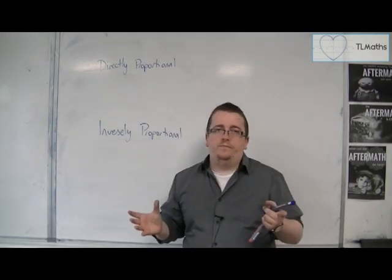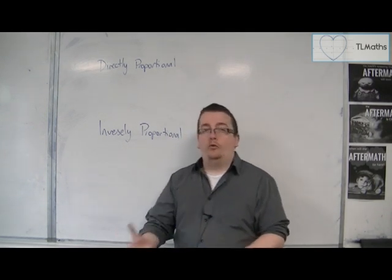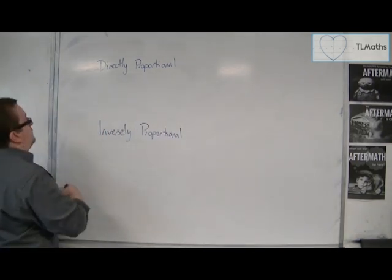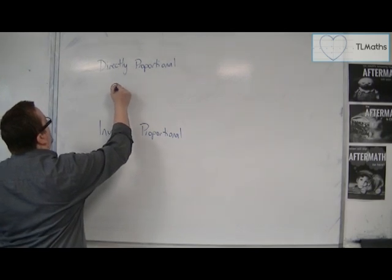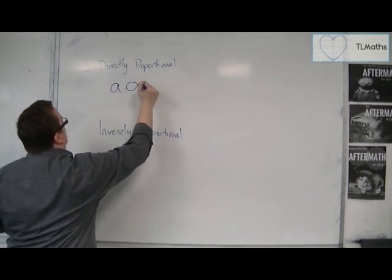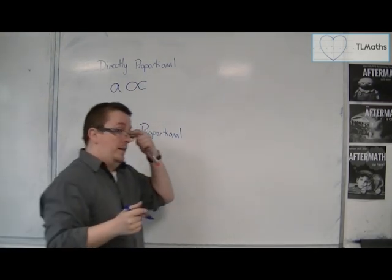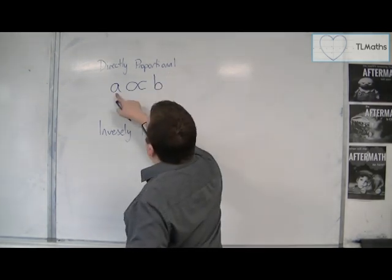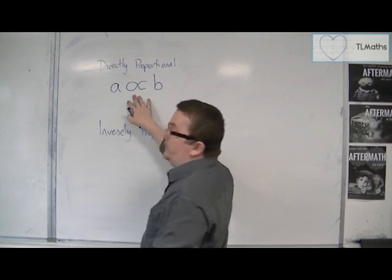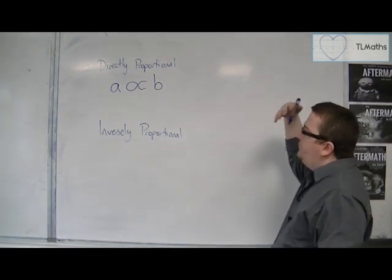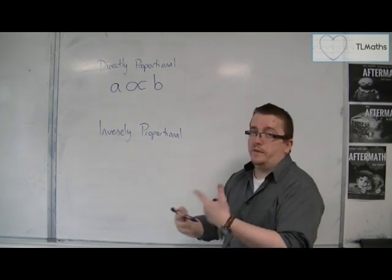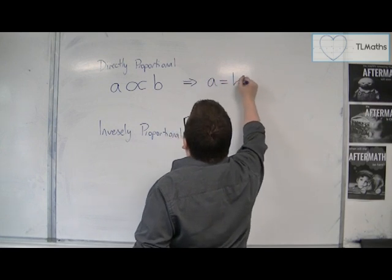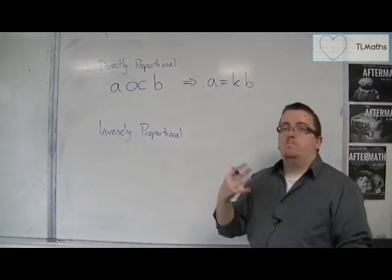Direct proportion is when one thing is a multiple of another. In general, we write that down using a symbol that looks almost like an alpha, or almost like an infinity symbol that hasn't quite gone all the way around. So we say that A is directly proportional to B using this notation. But we don't actually use this notation as part of the calculation — what we then say is that A is equal to K lots of B, so one is a multiple of the other.